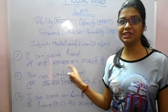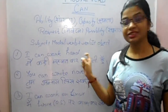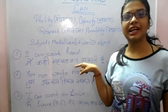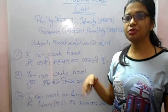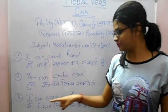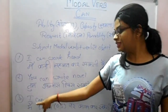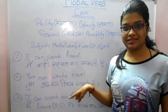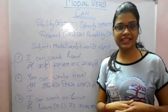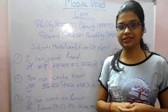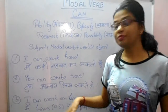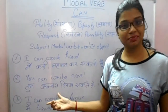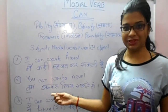Our first sentence is: 'I can work hard' — main mehnat kar sakti hun. Second sentence: 'You can write a novel' — tum novel likh sakte ho. Third: 'I can work on Linux' — Linux ek operating system hota hai, so main Linux pe kaam kar sakti hun.